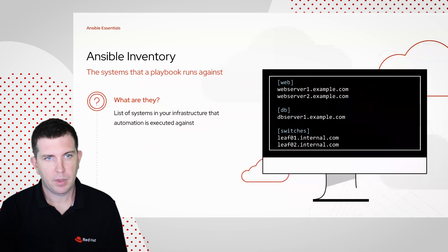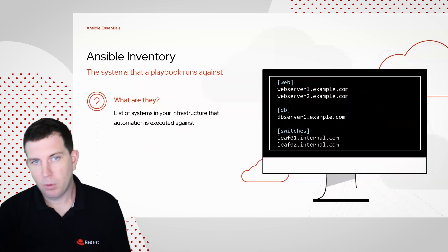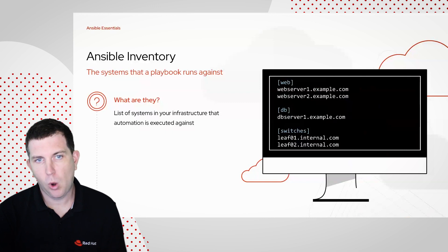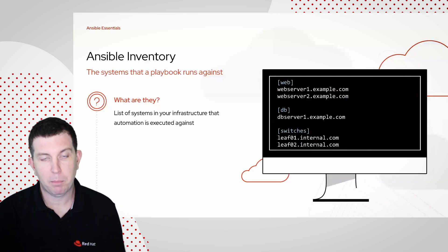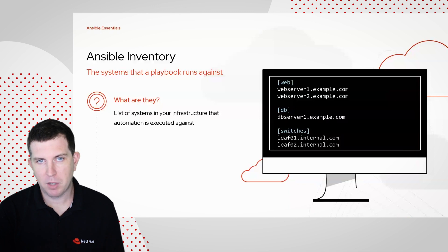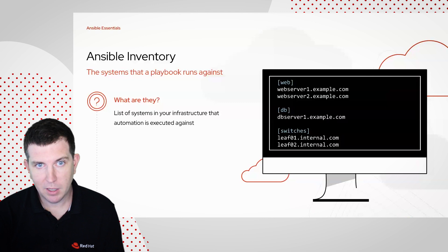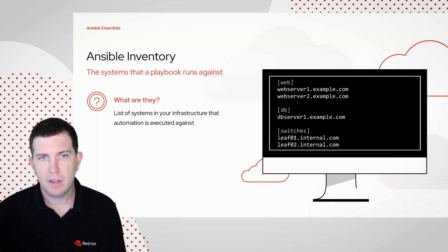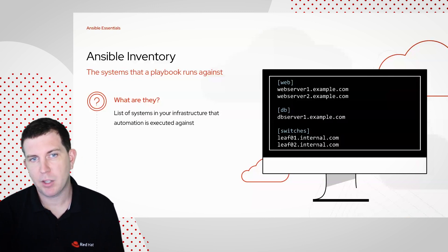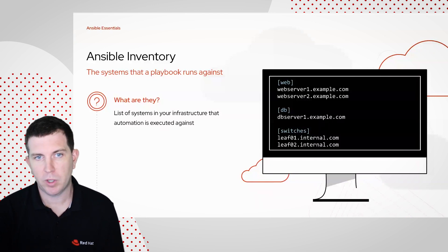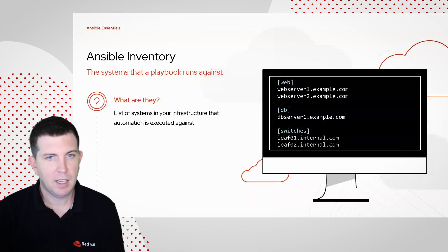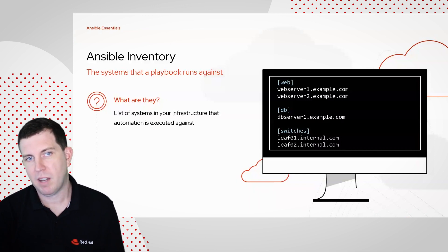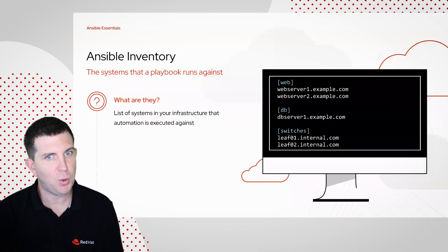Inventory: when we said 'web' before, you can see that's a group. With brackets around 'web,' we actually have two web servers here — webserver1.example.com and webserver2. We have three groups here: web, db, and switches. We can have an inventory that multiple playbooks are hitting, and you can tell a particular playbook to run only on a particular piece of the inventory. The playbook we just showed was only running on the web servers — it obviously doesn't make sense to install HTTPd to a Cisco switch.